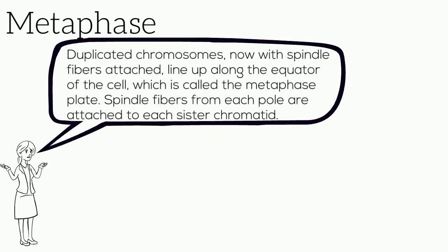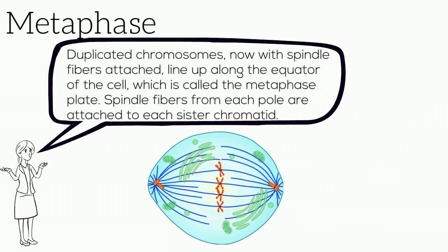As the cell enters metaphase, duplicated chromosomes with spindle fibers attached line up along the equator of the cell, which is called the metaphase plate. Spindle fibers from each pole are attached to each sister chromatid.